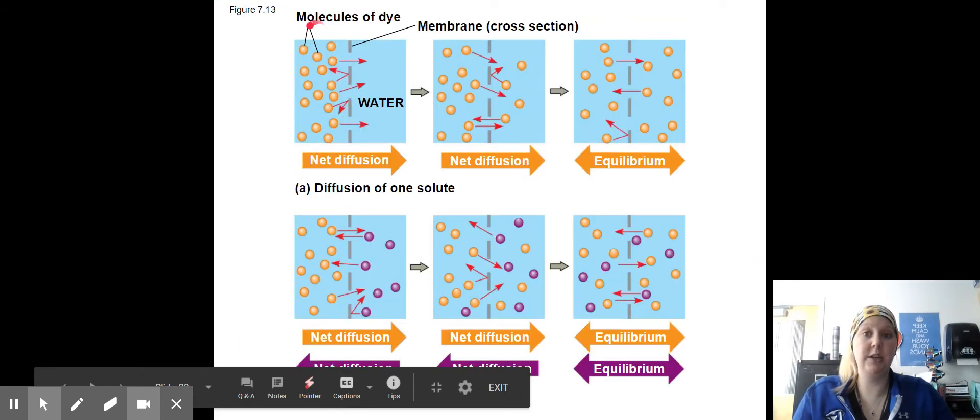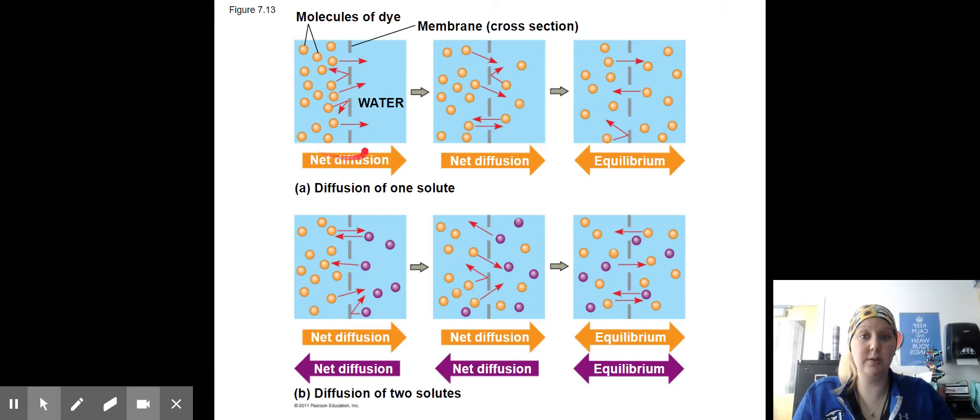So here we have diffusion of just dye molecules and a semi-permeable membrane. And the net diffusion is going to move until the same amount of molecules are on both sides of the membrane. This is high concentration. This would be low concentration. So we're moving from high concentration to low concentration until we reach equilibrium.